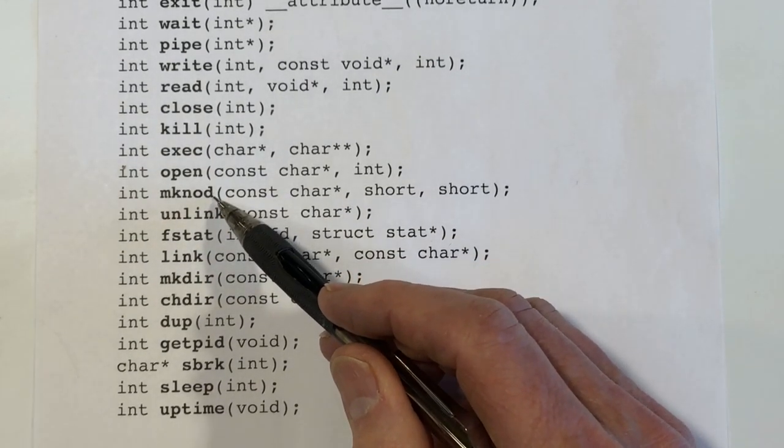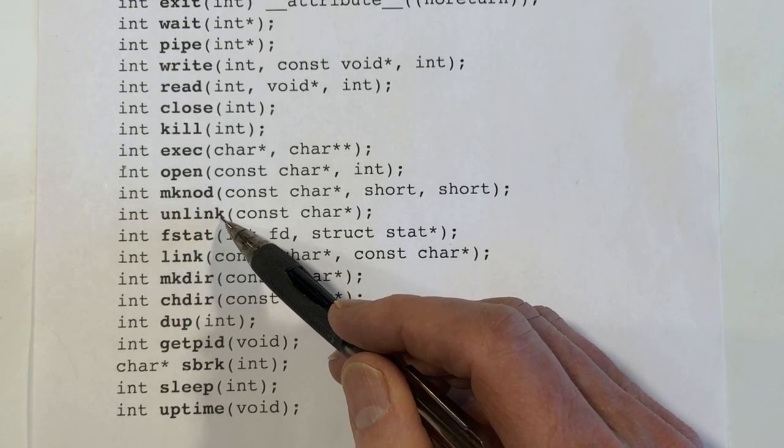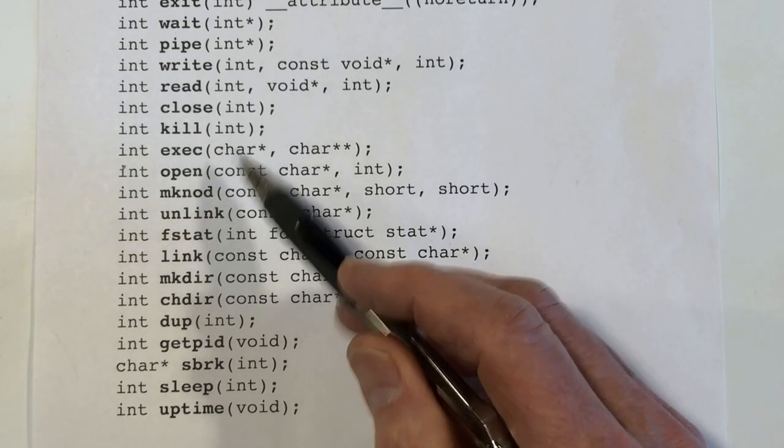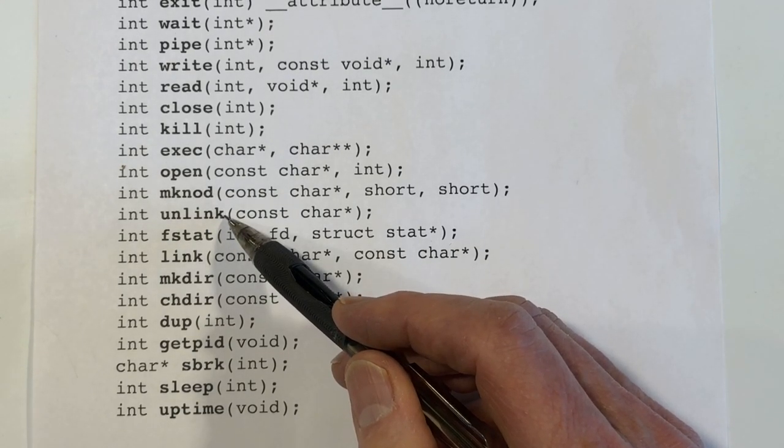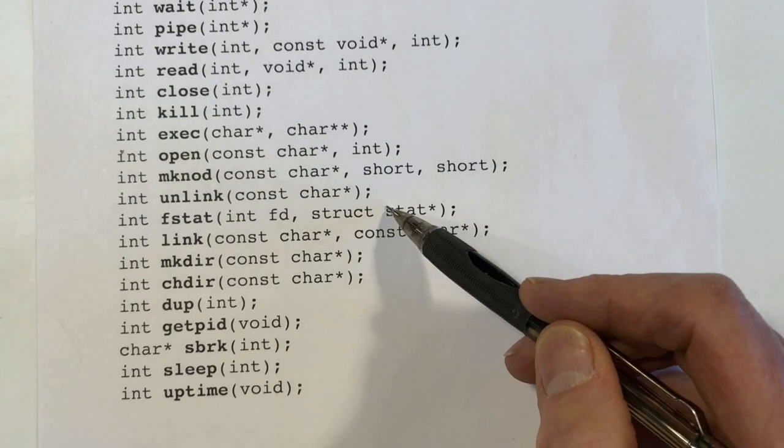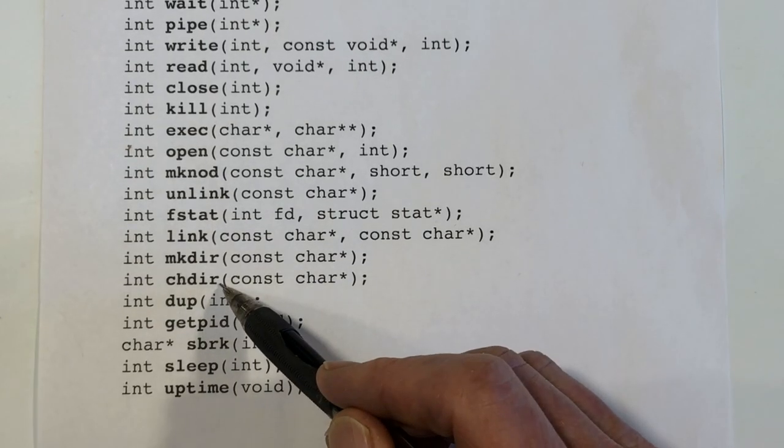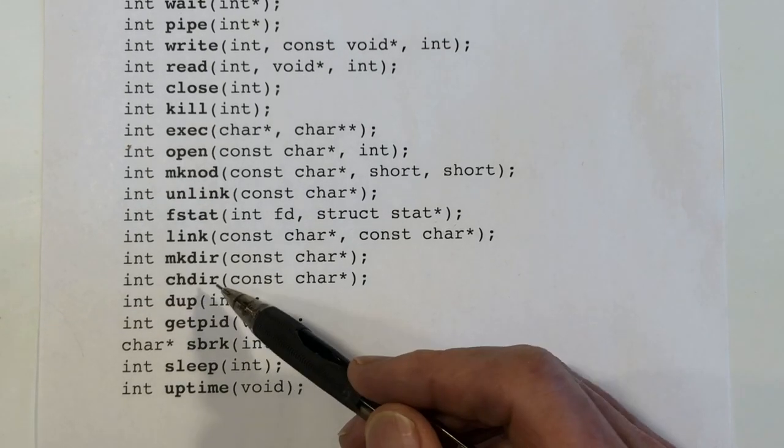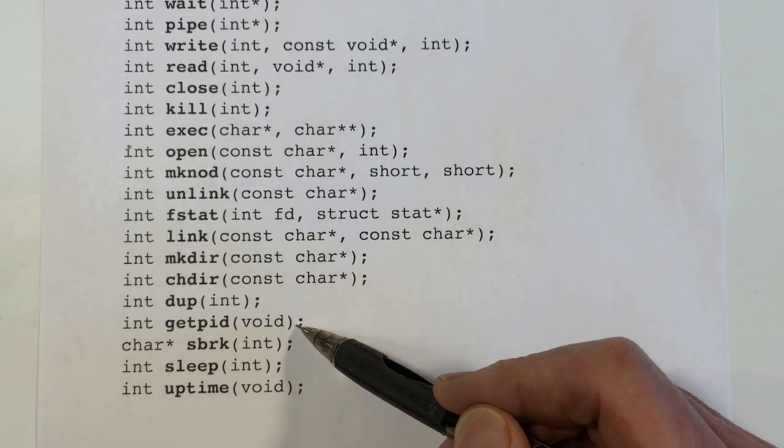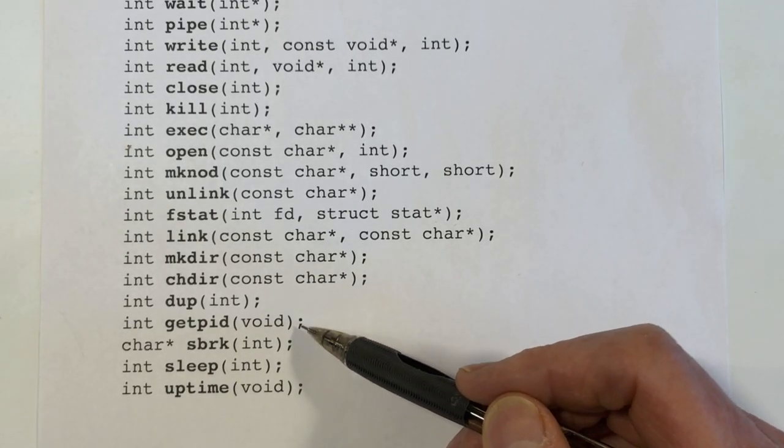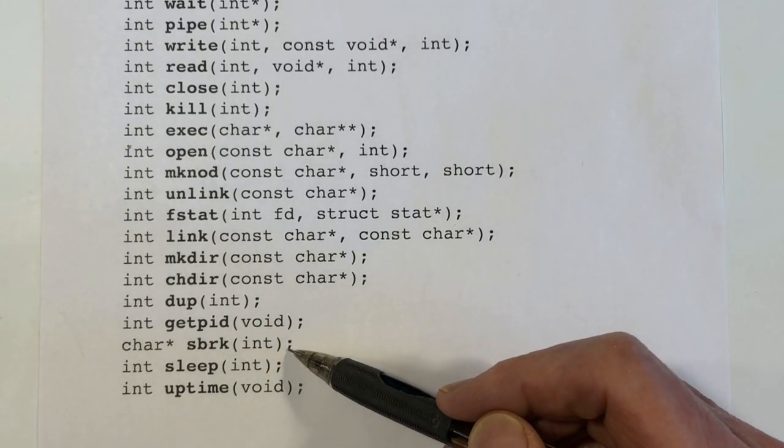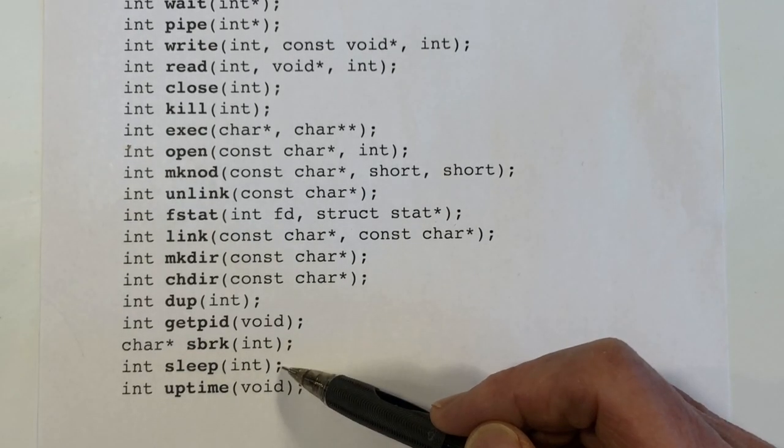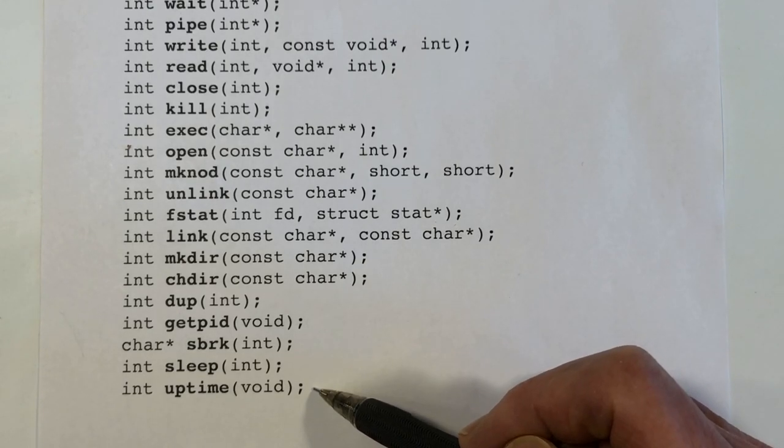We can make inodes. We can create links, hard links, and we can remove hard links and unlink files, thereby possibly removing them if it's the last link. We can get information about files. We can change directory, so we do have a notion of the current working directory. Dup is used for copying file descriptors. We can get the process ID for the current process. We can grow the heap, so that's this function here, the system call here. And we can put a process to sleep for a while. We can also see how long the kernel has been running.